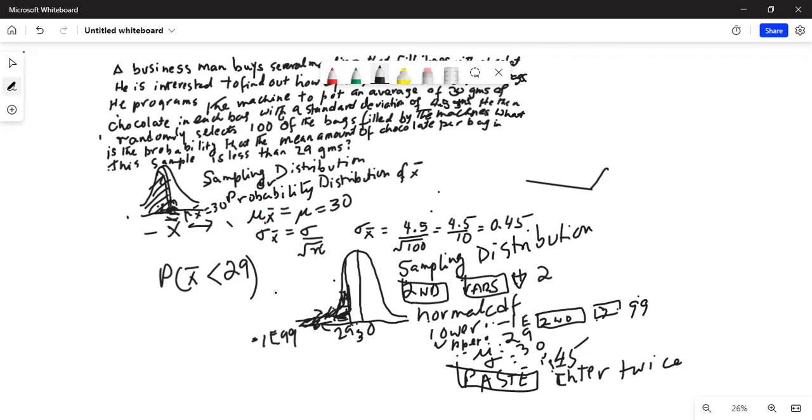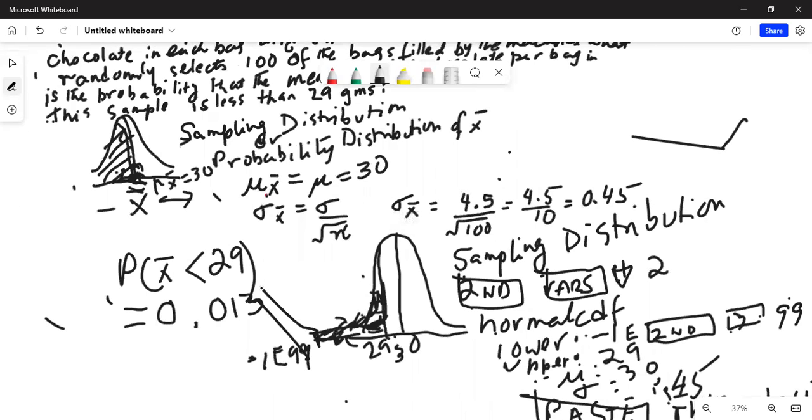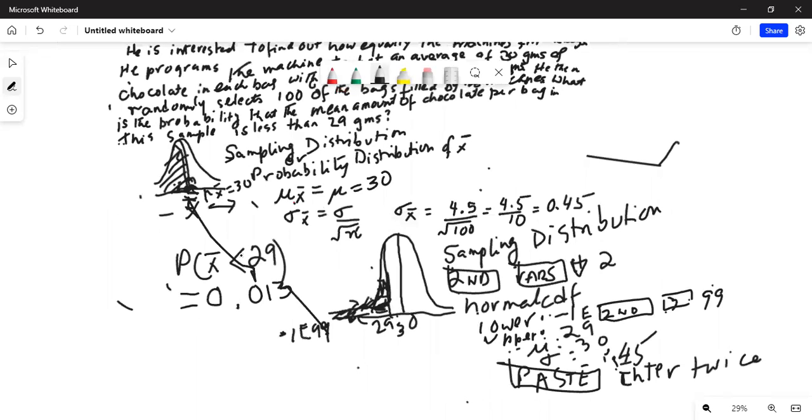So the answer is 0.0131. So I will stop here today. That's your answer. Probability of x bar less than 29 is 0.0131, which is less than 0.05. So the sample mean less than 29 is very unusual because this probability is less than 0.05, which is 0.0131.